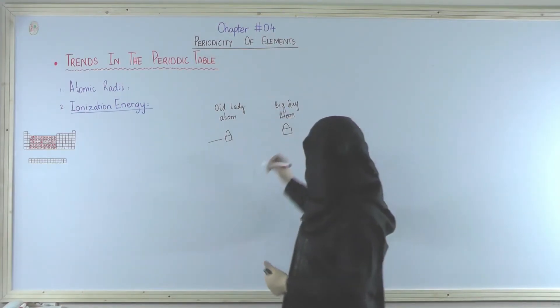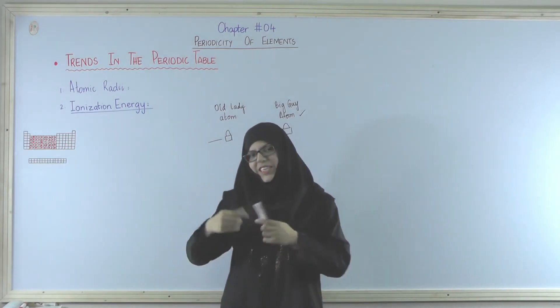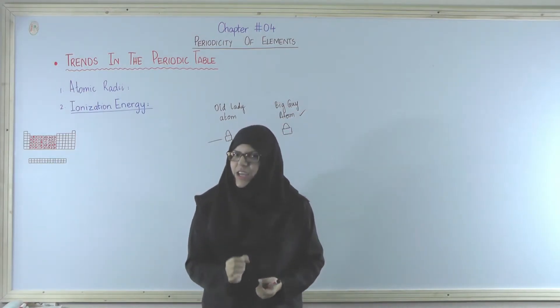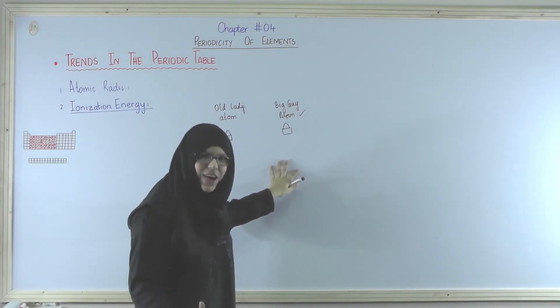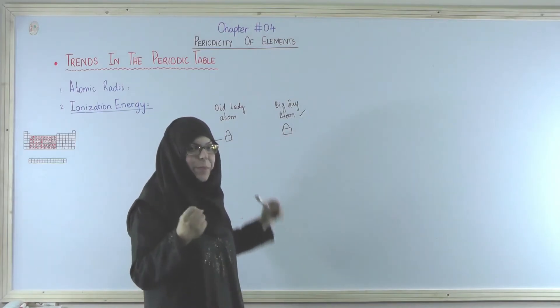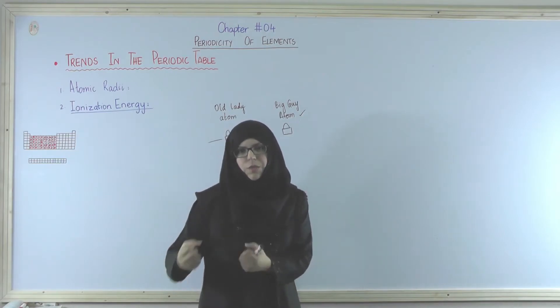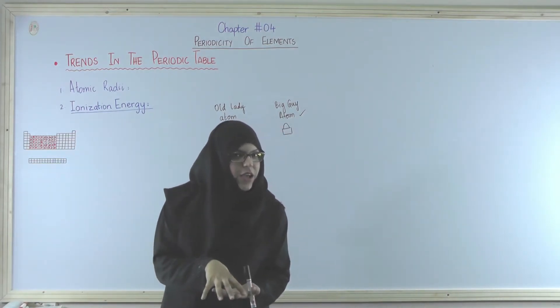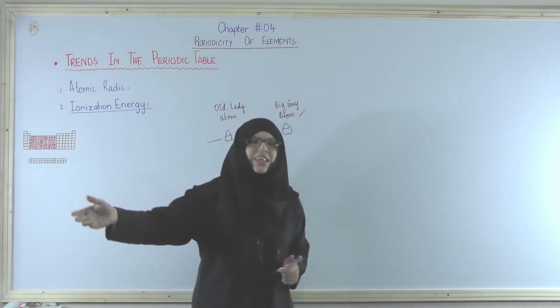Lekin yahi pe agar big guy atom ke paas wohi purse hoga, to kya usse kisi chor ko, kisi thief ko usse wo purse lene mein asaani hogi ya mushkil hogi? Very good. Kyun mushkil hogi usko? Usko mushkil isliye hogi kyunki yahan pe big guy ke paas bahut zyada strength hai, bahut zyada usme energy hai. Aur jitni energy wo apne purse ko pakadne mein laga raha hai, at least utni energy to thief ko lagani padegi. Aur isse thodi si aur zyada lagani padegi taaki wo at least usse kheech ke leja sake.